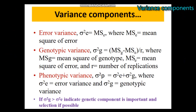Hello everybody. Today we will see the genetic variance components of simple lattice design using our software. The first one we will calculate is the error variance, the second one is genetic variance, the third one is phenotypic variance, and also we will see the remaining components.